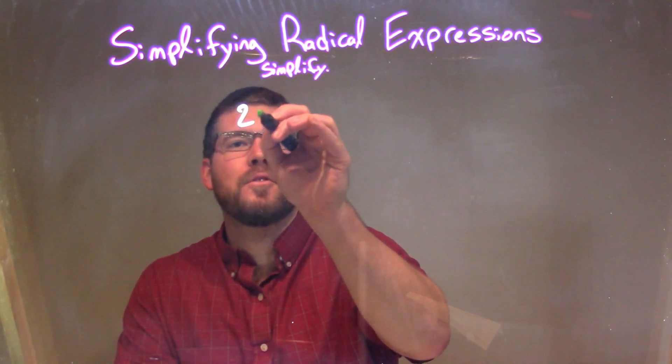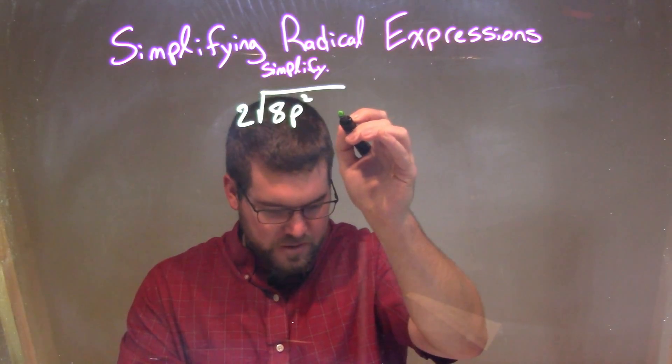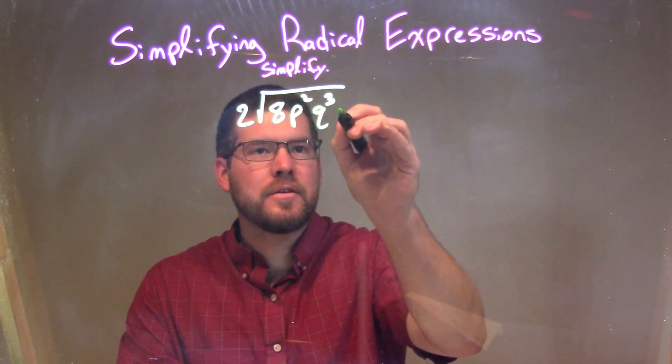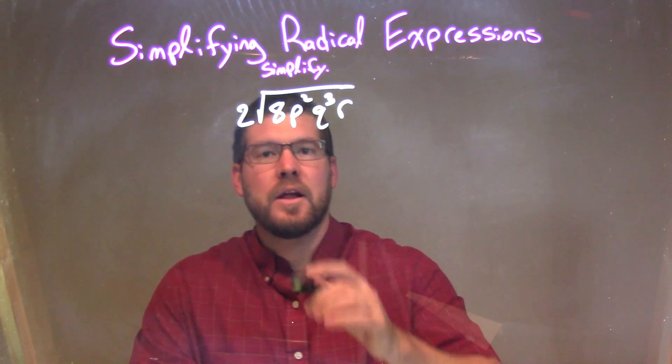So if I was given this expression: 2 times the square root of 8p² times q³ times r. What we're going to do is break down each one of these elements here.